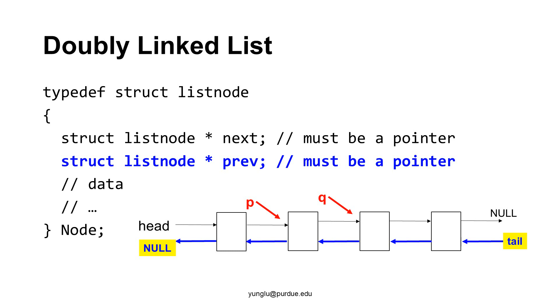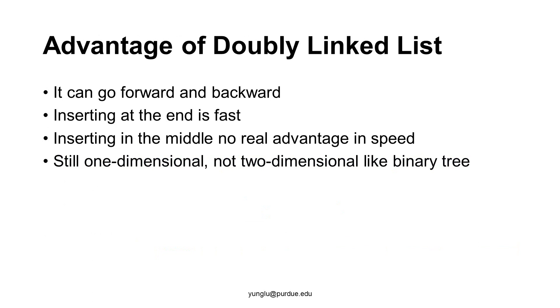What is the advantage of doubly linked list? It can go forward or backward easily. When a node has only one pointer, it can go in only one direction. Since a doubly linked list can go backward, when inserting a new node, we do not have to keep two pointers for the purpose of tracking the node before the insertion.